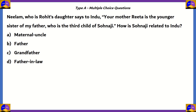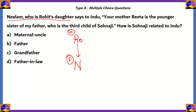Let's draw the relations. Neelam is Rohit's daughter — so Rohit (male) is the father of Neelam (female). Neelam says to Indu: your mother Rita is the younger sister of my father. So Indu's mother is Rita (female), and Rita is the younger sister of Rohit — meaning Rohit and Rita are siblings.